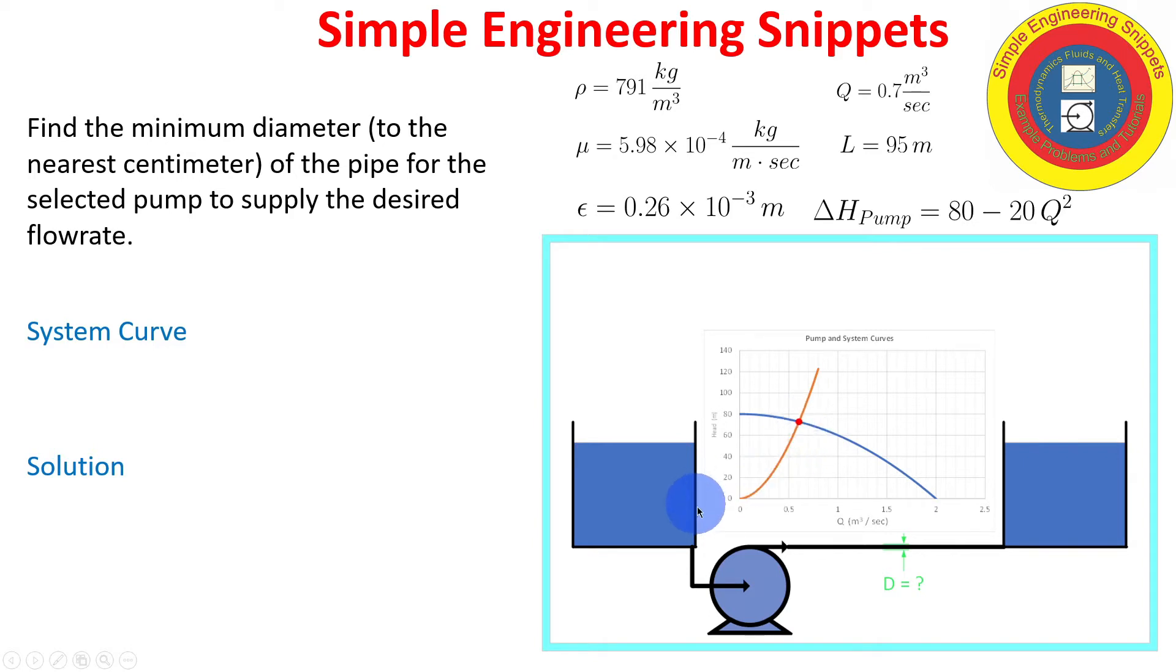In this case, it looks like it's right above 0.6 cubic meters per second, right at 0.6 cubic meters per second. And our desired flow rate is at 0.7, which is indicated here with the green diamond. So whatever diameter of pipe that resulted in this system curve, it is too small. The head loss is too high. We are not getting our desired flow rate.